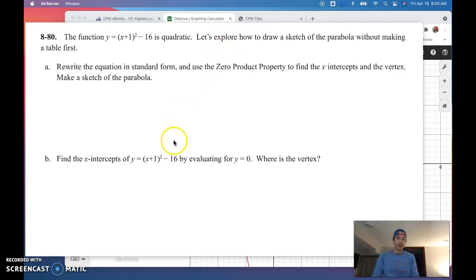And we're going to use some techniques that we've developed. We're going to put them together and make a sketch of the parabola without using a table first. Part A says go ahead and write the equation in standard form and use the zero product property to find the x-intercepts in the vertex and then sketch the parabola. Now, for the sake of time, I'm going to pause the video. I'm going to do this. I'll explain my steps in a second. I'm going to encourage you to do the same thing. Go ahead. Pause the video now. Work this out. Try to write this in standard form. And then unpause to check the work.